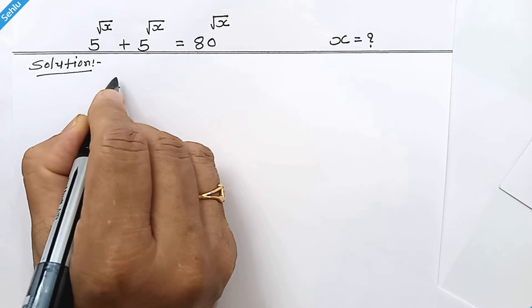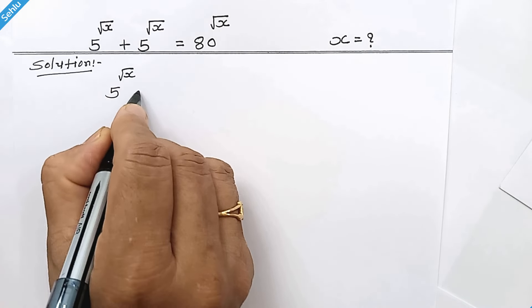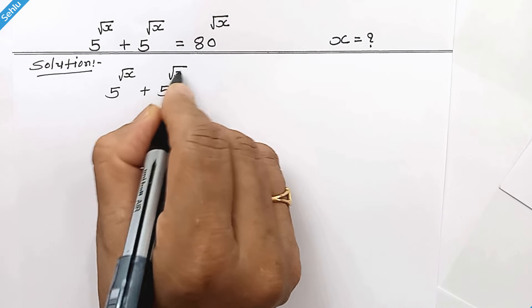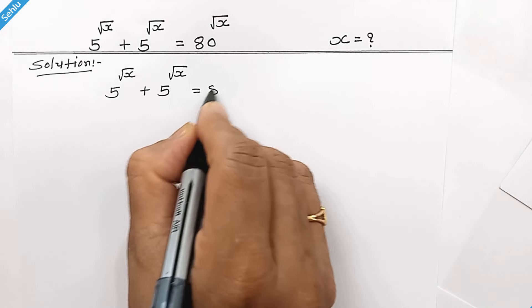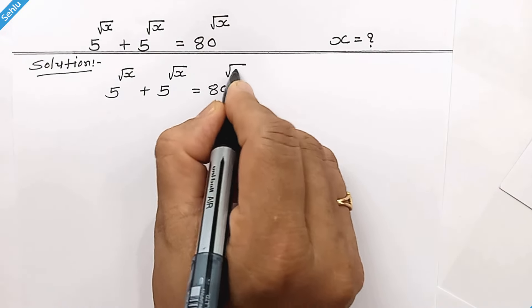Question is: 5 to the power square root of x plus 5 to the power square root of x is equal to 80 to the power square root of x.